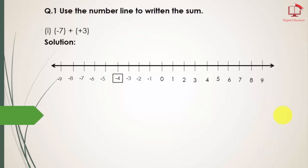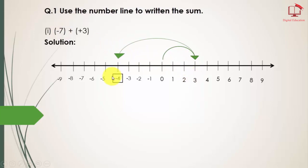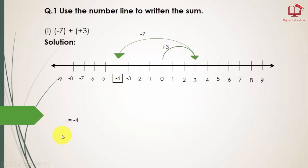The first number is positive, so we will draw our arrow from 0 going 3 digits to the right: 1, 2, and 3. Next is minus 7, so here I am drawing another arrow from 3, going minus 1, 2, 3, 4, 5, 6, and 7. This point is positive 3 and this ending point is minus 7. If we combine these two numbers we get the answer minus 4. This is our answer.